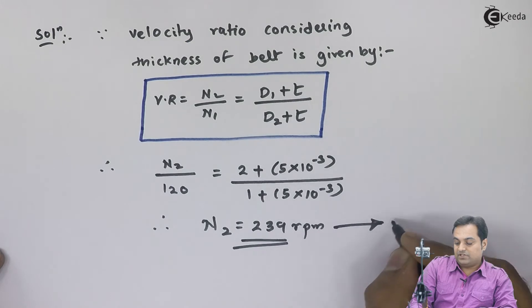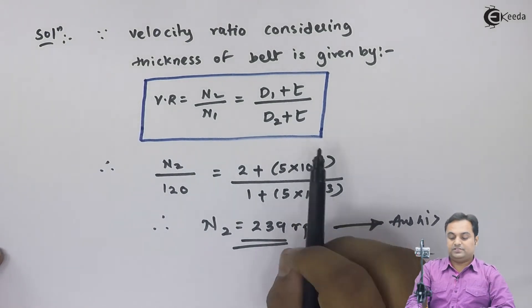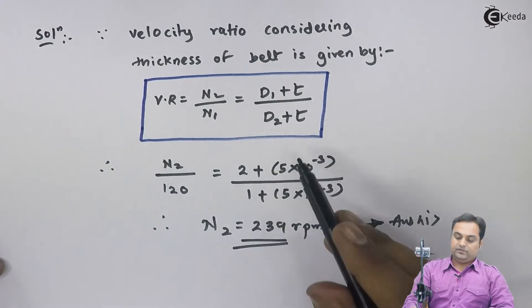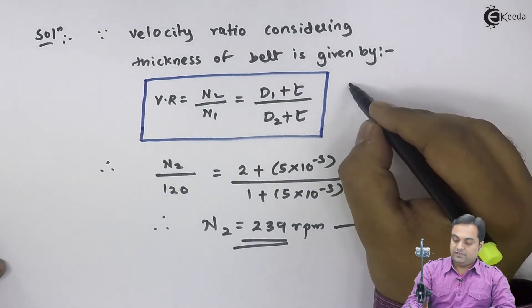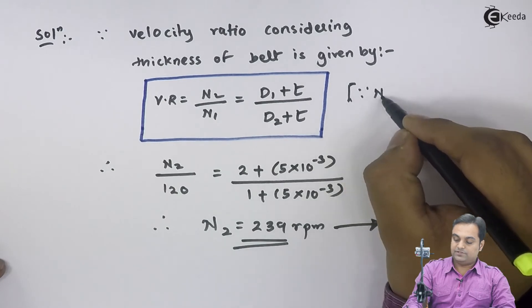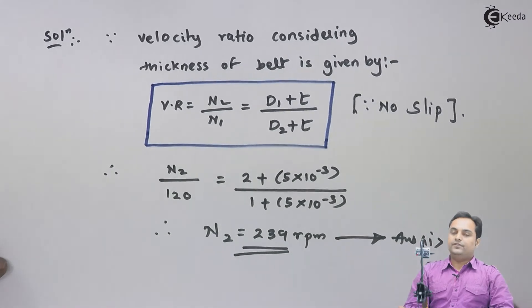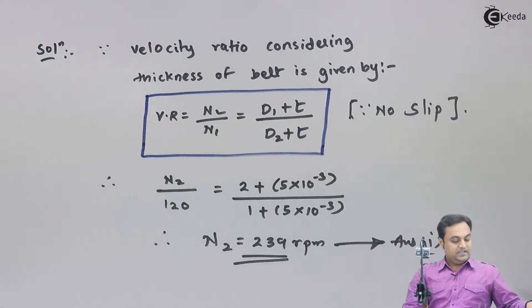This is our first answer - that is, we are considering the thickness and neglecting the slip. The formula which I had written is for no slip. In the next case we have to consider the slip of belt which is given as 3 percent.